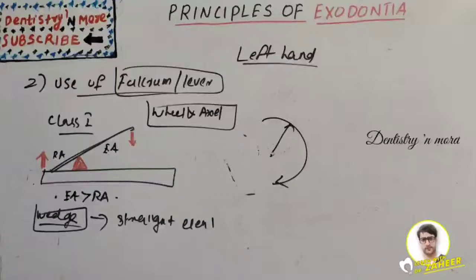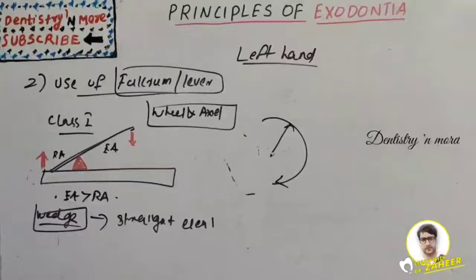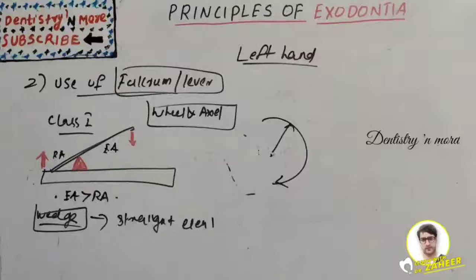These are the basic principles of exodontia discussed in detail — the principles, pre-surgical assessment, post-extraction instructions, positioning of dentist and patient, and armamentarium. Hope you understood the exodontia concept. It will definitely help in writing exams as there are lots of questions asked from exodontia — the wheel and axle principle, wedge principle, lever principle, and positioning of the dentist and patient. I will come up with a new topic in oral surgery. Thank you.